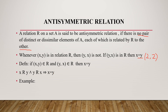For example, consider the relation {(2,3), (3,4), (3,3)}. For anti-symmetric: (2,3) is in R, but (3,2) is not in R — condition satisfied. (3,4) is in R, but (4,3) is not in R — condition satisfied. (3,3): x equals y, so that is fine. This is an anti-symmetric relation.